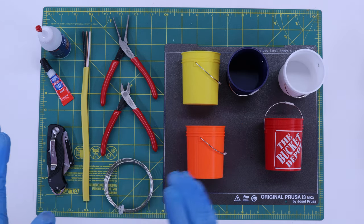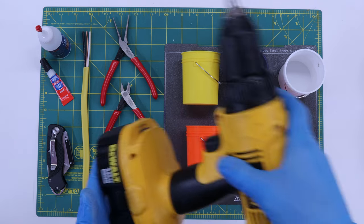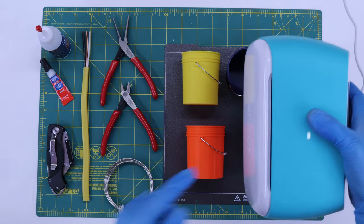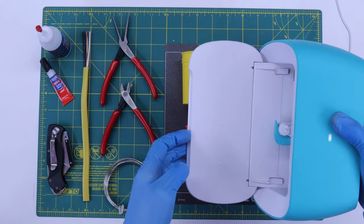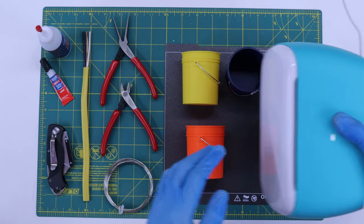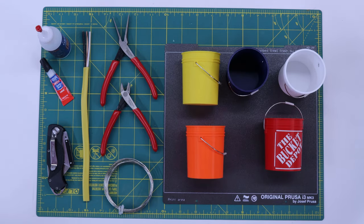You'll need a 3D printer, simple hand tools, a drill, and finally I'll use my Cricut Joy to make labels for the buckets, but this isn't strictly necessary, you could get away with just using stickers.